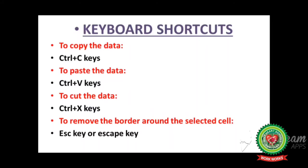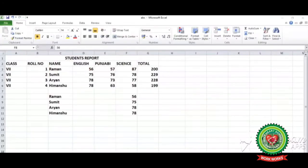Now we will discuss how to move data. We have four methods for moving data and the shortcut key for moving is Ctrl+X. Moving means the data will change position from the original location to a new position. There is a difference between copying and moving: copying means to create a duplicate copy of particular data, while moving means to change the position of data from one place to another.